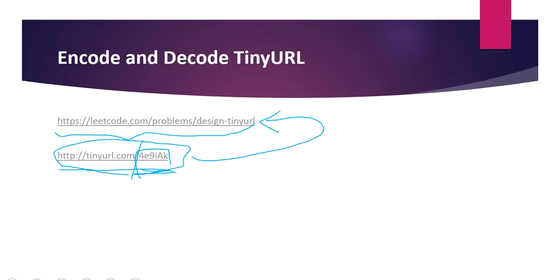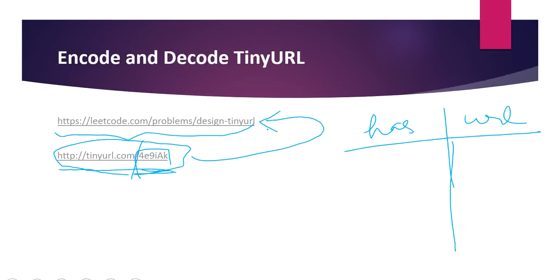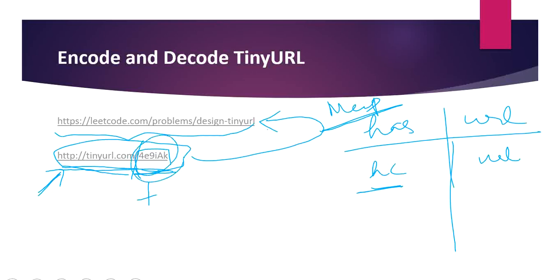So how are we going to do it? We are going to maintain a map which has the hash code of the given long URL as key and the URL itself as the value. For every long URL we get, we store it with the corresponding hash code. Our hash map maintains the repository of hash codes and long URLs, and we return http://tinyurl.com plus the hash code of that particular long URL. In our decode method, given the short URL, we search the hash code at the end of the URL in our map and return the corresponding long URL as output.